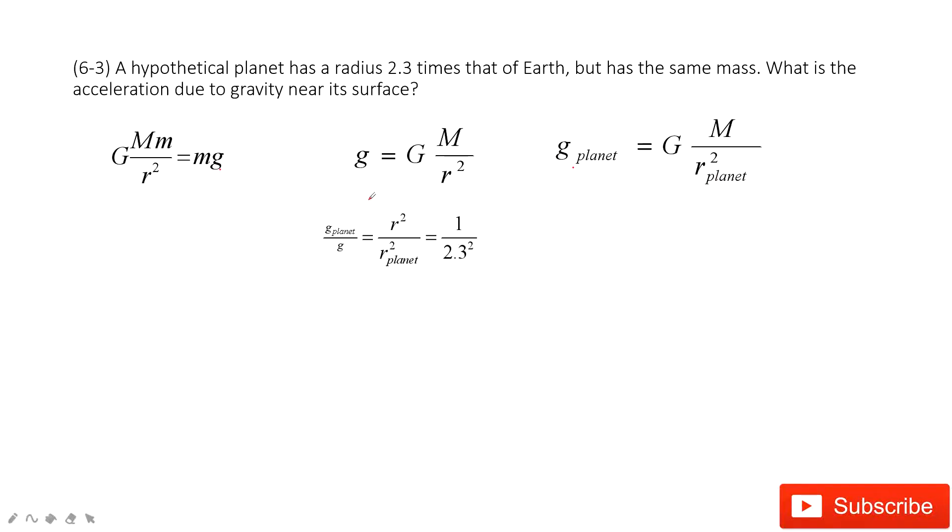So in this way, we can find this g, the acceleration due to gravity on this g planet divided by this g, just equal to the r squared divided by r planet squared. We just input these two equations in this function.